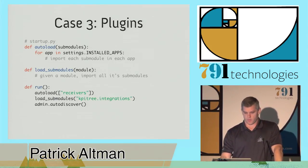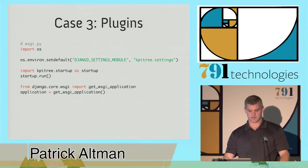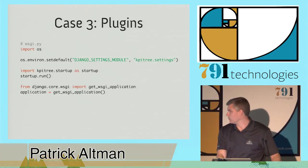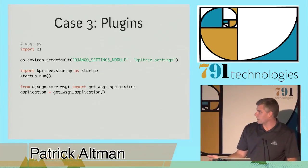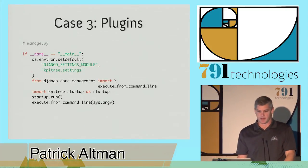So in order for this run method to execute, we have to modify the two entry points to our application. And that's the WSGI module. You can see here, we import KPI Tree startup and call startup run. We do the same thing in the manage.py.